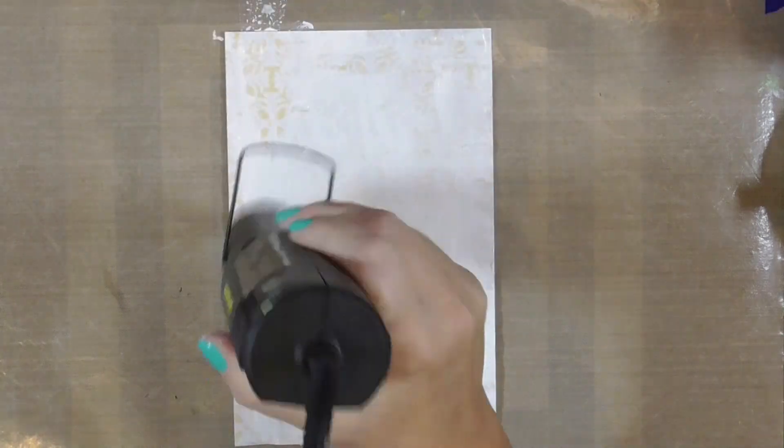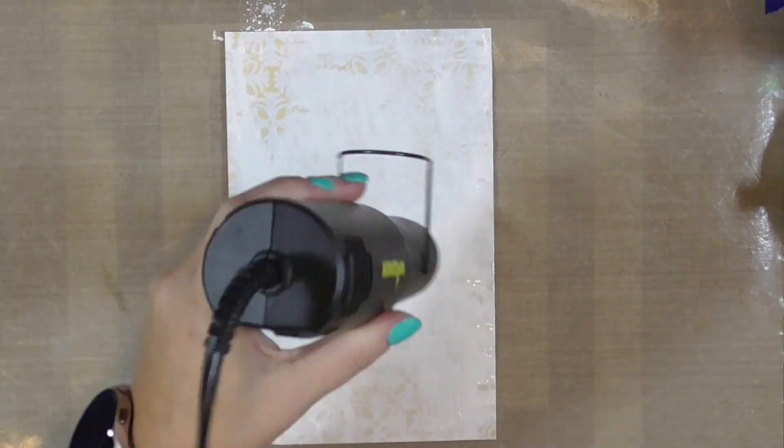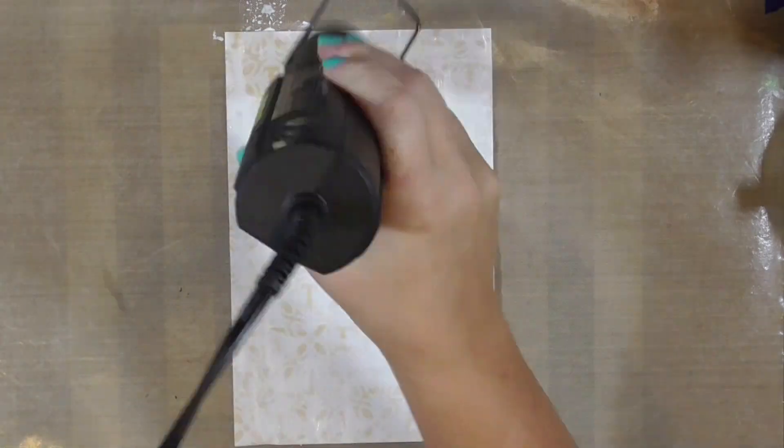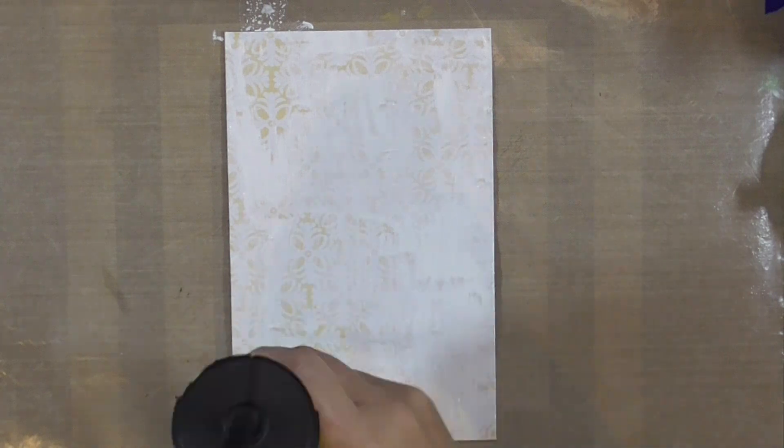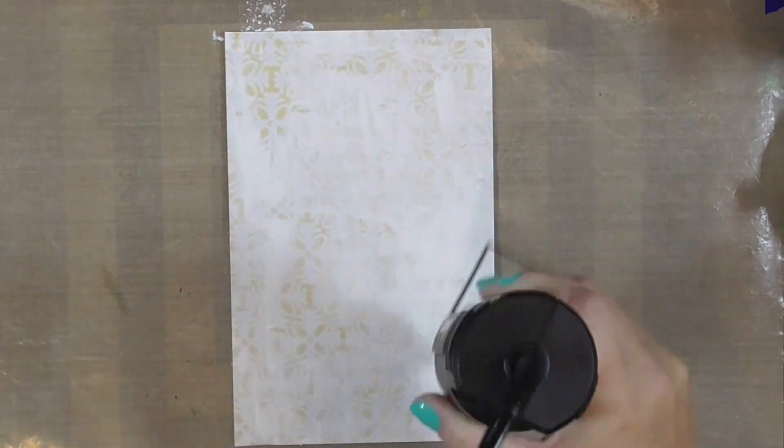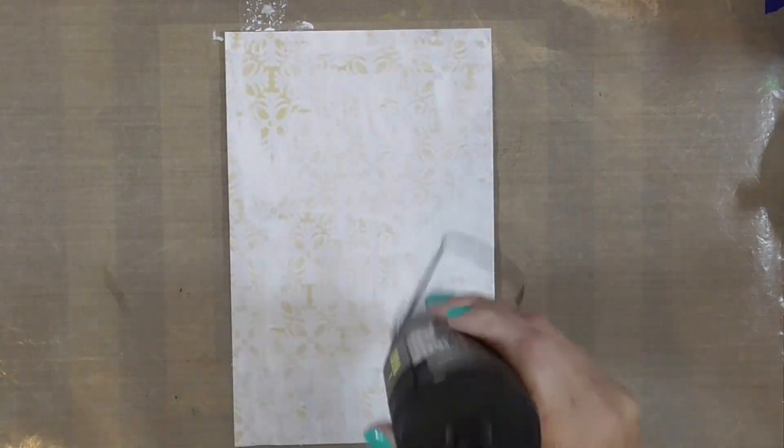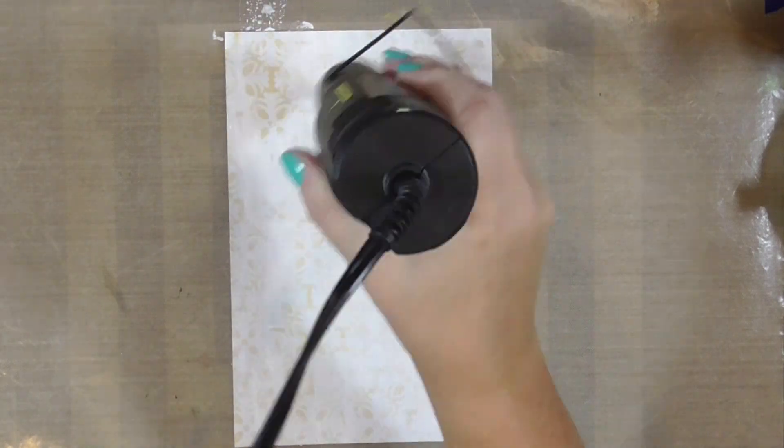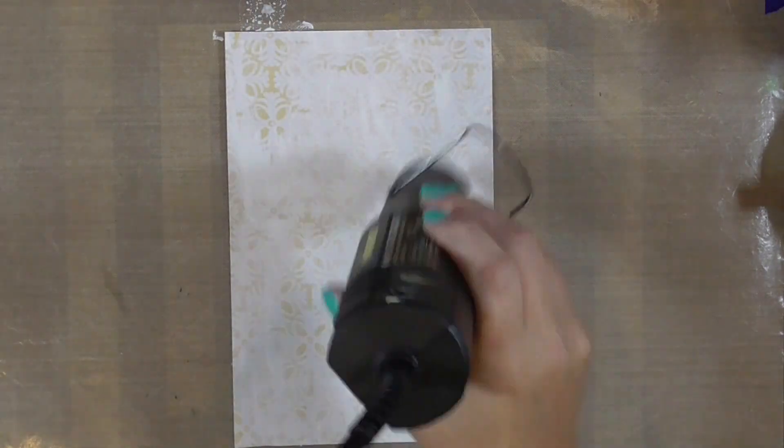I decided I was going to be a little bit more aggressive about how I distress this background. So I needed that gesso to be a little drier, to make that paper less prone to tearing or peeling. I spent a good solid two minutes heat setting this to make sure that gesso was all nice and dry.